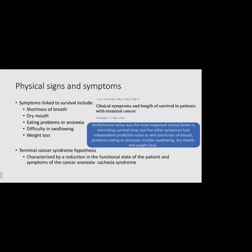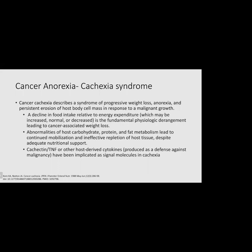Physical signs and symptoms also affect prognosis. Symptoms linked to survival include shortness of breath, dry mouth, anorexia, difficulty swallowing, and weight loss. The terminal cancer syndrome hypothesis is characterized by reduction in functional state and symptoms of cancer anorexia-cachexia syndrome, which describes progressive weight loss, anorexia, and persistent erosion of host body cell mass in response to malignant growth. The main pathophysiology includes decline in food intake relative to energy expenditure, abnormalities of carbohydrate, protein, and fat metabolism, and cacectin (tumor necrosis factor) and other host-derived cytokines implicated as signal molecules.